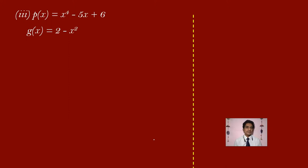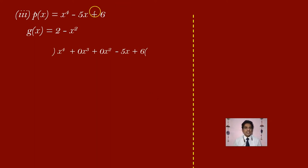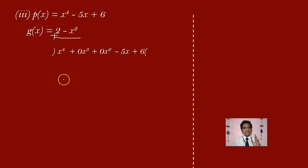Let us move on to the third problem. Here the polynomial is x power 4 minus 5x plus 6. The degree is 4, but x power 3 and x power 2 terms are missing. So when writing the division, the dividend becomes x power 4 plus 0x cube plus 0x square minus 5x plus 6. Now look at the divisor: 2 minus x square. In standard form, it becomes minus x square plus 0x plus 2.